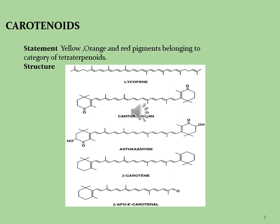Beta-carotene is a red-orange pigment found in plants and fruits, especially carrots and colorful vegetables. The human body converts beta-carotene into vitamin A, called retinol. Beta-carotene is a precursor of vitamin A. We need vitamin A for healthy skin and mucous membranes, our immune system, and good eye health and vision. Vitamin A can be sourced from the food we eat.